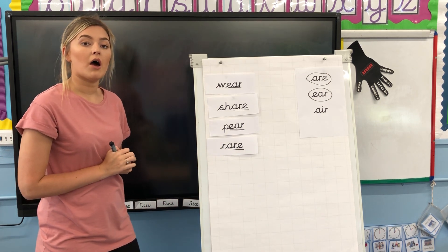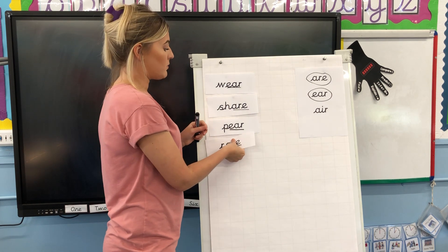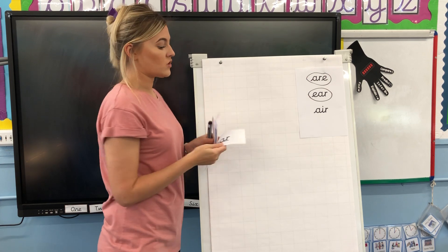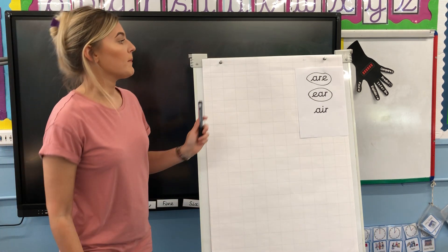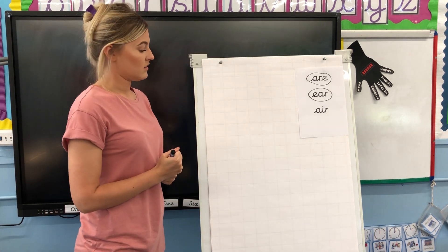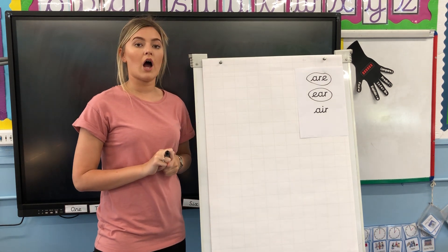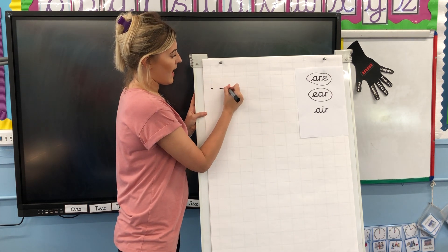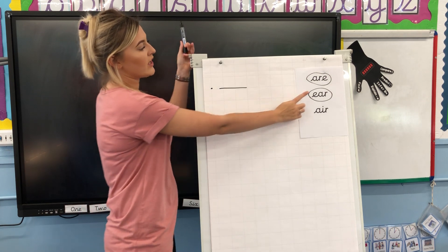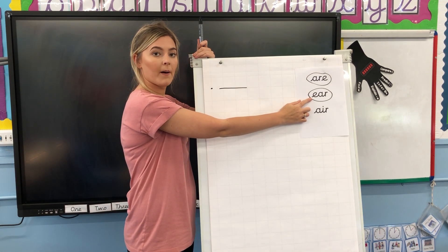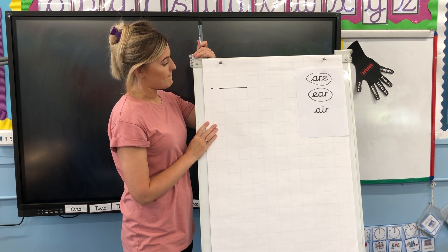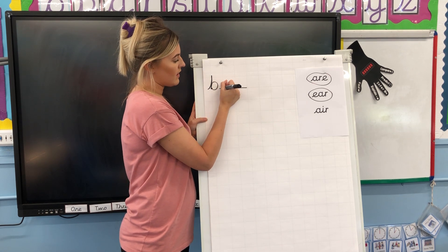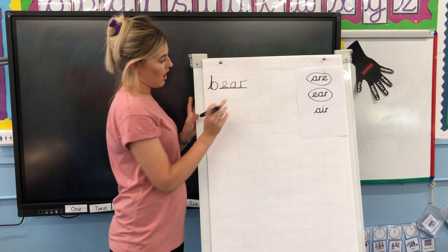We are now going to have a go at writing some words using the Air phoneme. So you will need a pen and a piece of paper. I'm going to draw sound buttons to help you, and I will also be kind enough and point to which Air it is. The first word we're going to have a go at spelling is the word B-Air: Bear. And we are using the E-A-R. Well done if you have spelt the word using the letter B, the E, the A and the R: Bear.